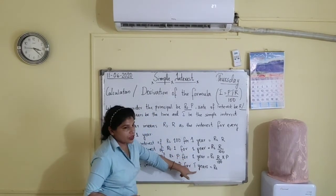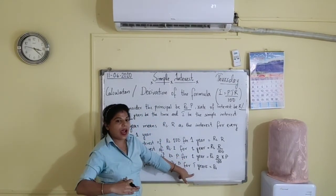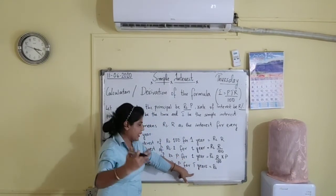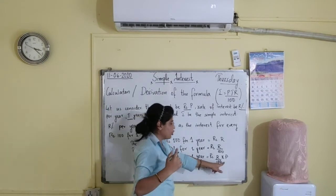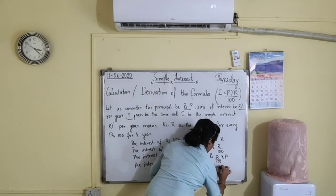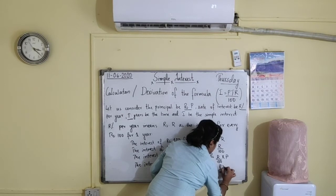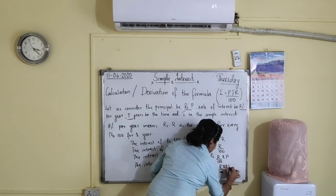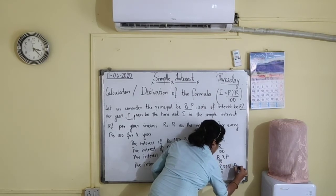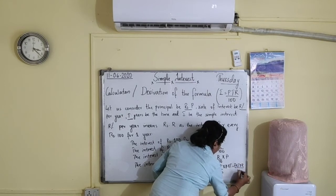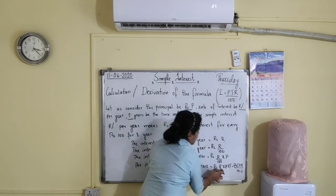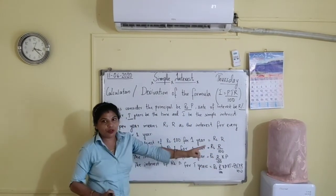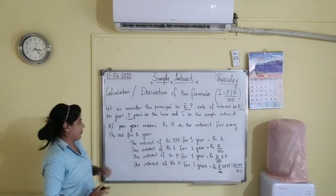Changing from 1 year to T years means we need to multiply again. So combining, we get rupees R upon 100 into P into T, which can also be written as PTR upon 100.